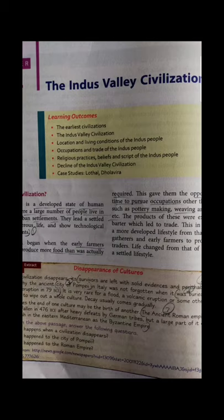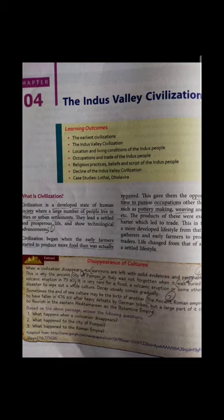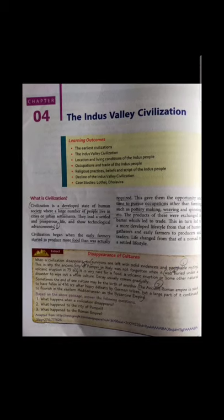Starting with the chapter, the first question that comes to mind is: what is the meaning of civilization and where did it come from? Civilization is actually a developed state of human society with a large number of people living in cities or urban settlements.